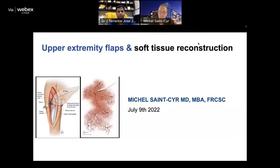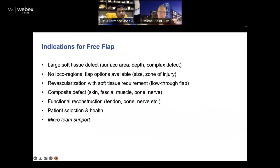I just want to cover basic principles and things that have certainly helped me in my career and my approach to upper extremity reconstruction — tips and pointers in terms of how to evaluate, manage, and follow through with post-operative care. Indications for free flaps: you all do free flaps, and obviously I look at the reconstructive ladder, but the upper extremity is critical for getting patients into rehabilitation, hand therapy, and getting them mobilized as quickly as possible.